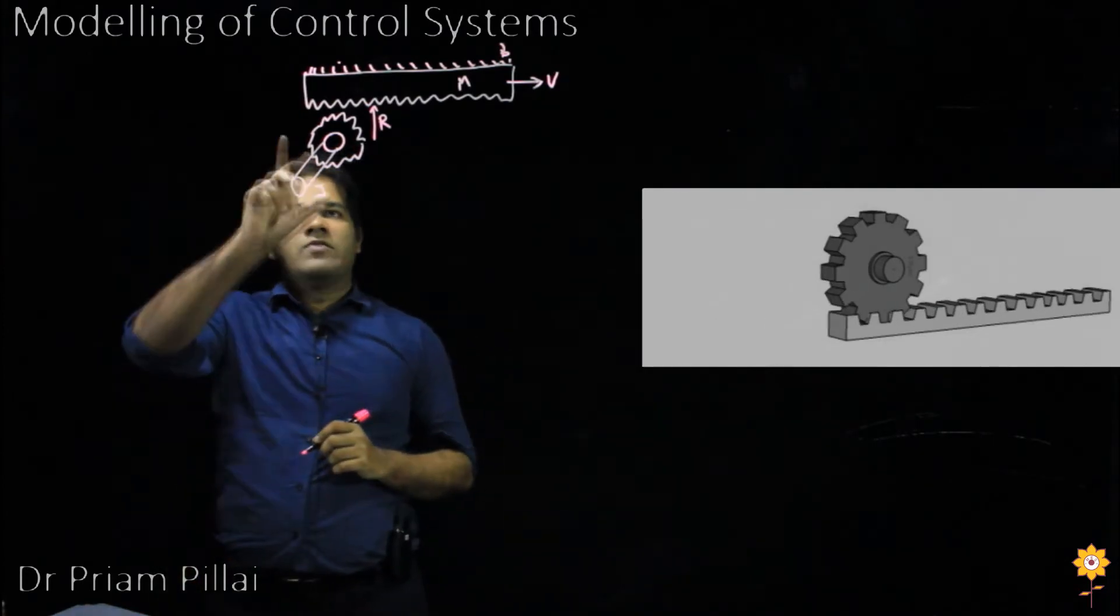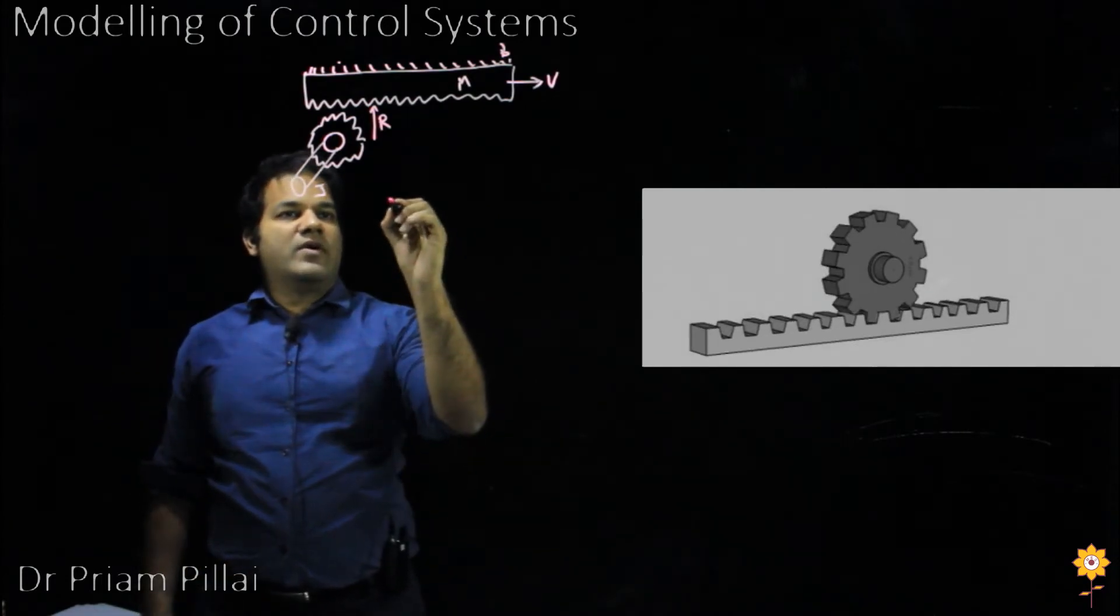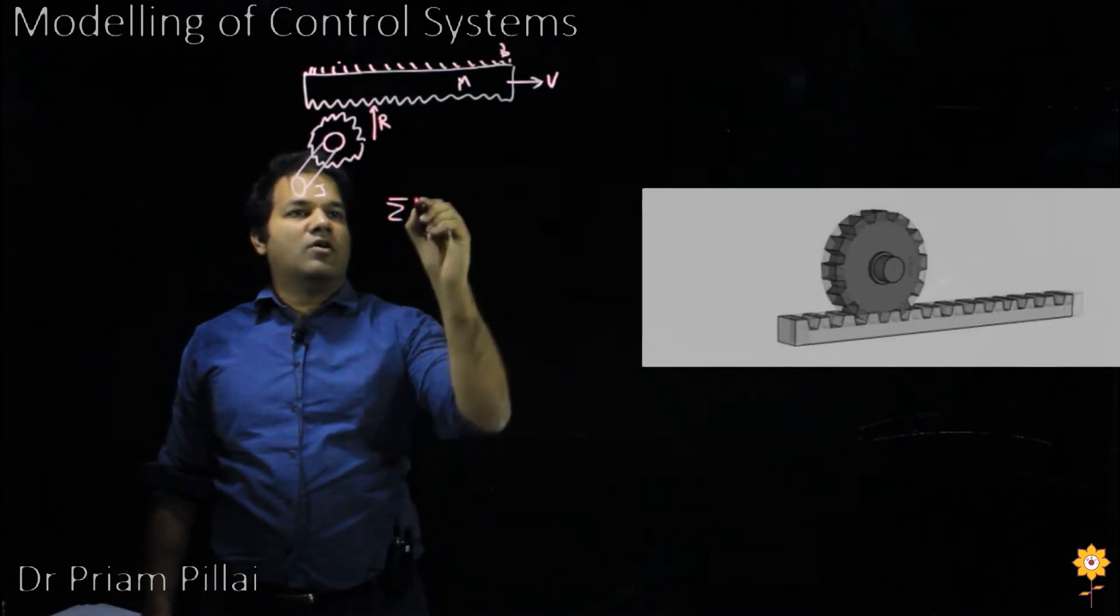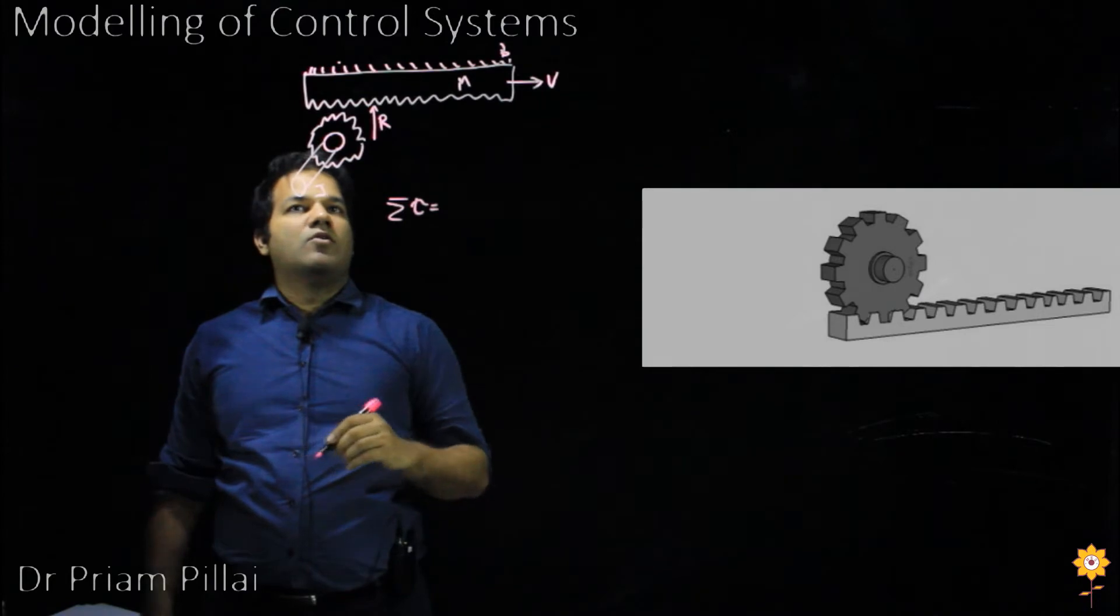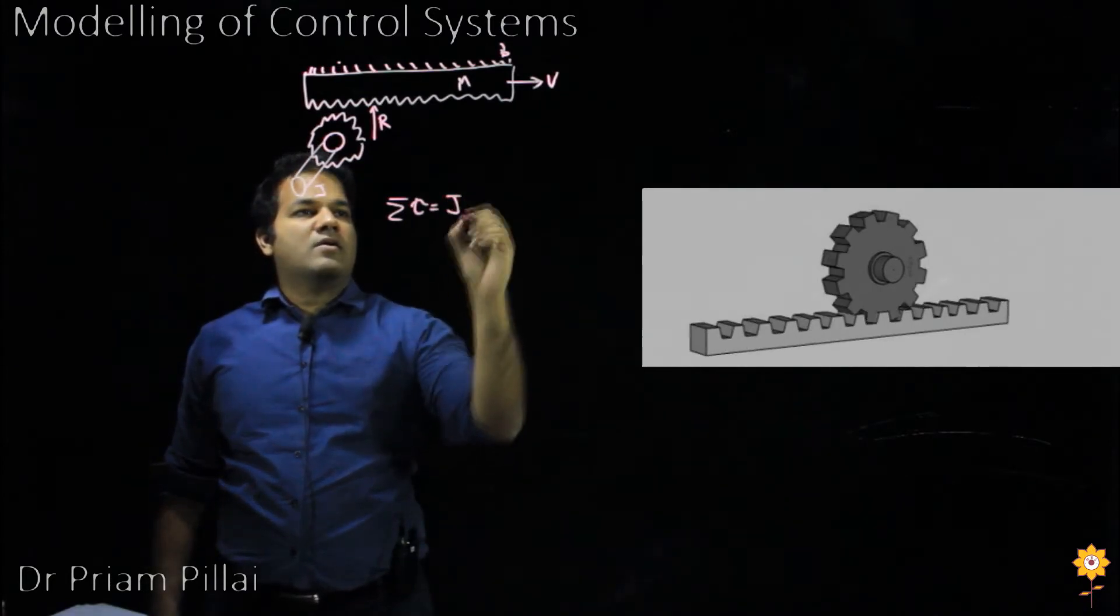If you apply conservation of angular momentum to the shaft, we get sum of all the torques acting on it would just be equal to J omega dot.